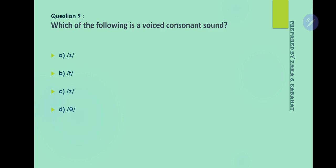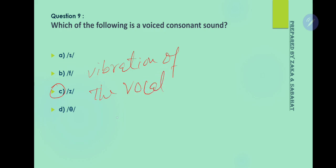Question: Which of the following is a voiced consonant sound? Option C is the correct answer. Voiced consonants involve the vibration of the vocal cords. When you say the /z/ sound, it involves vibration of the vocal cords, whereas other sounds like /s/ may not involve vibration of the vocal cords.